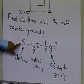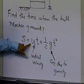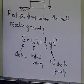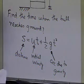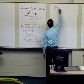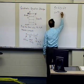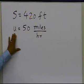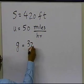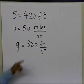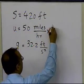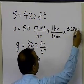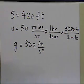Since we know the distance is 420 feet, we know the initial velocity is 50 miles per hour, and g — the acceleration due to gravity — is 32.2 feet per second squared, we can see this will result in a quadratic equation. However, since s is in feet, we need to convert u from miles per hour to feet per second by multiplying by 1 hour over 3600 seconds and 5280 feet per mile.